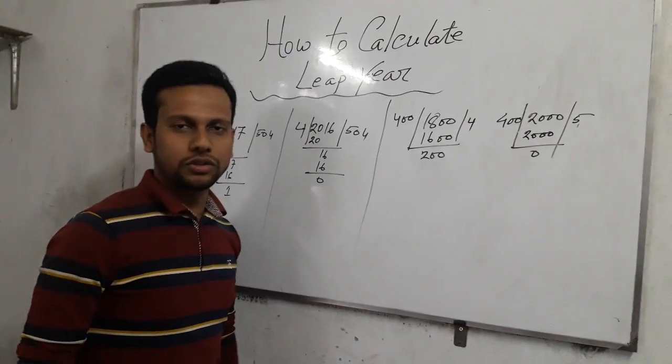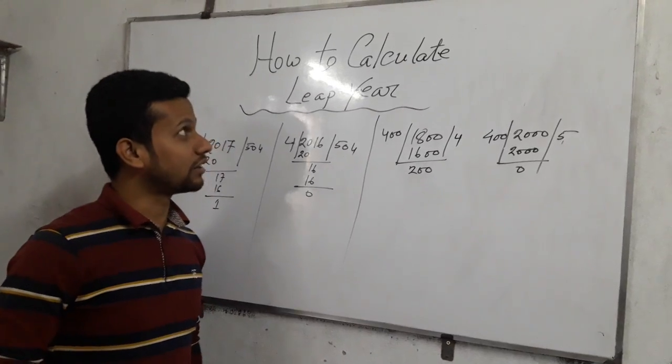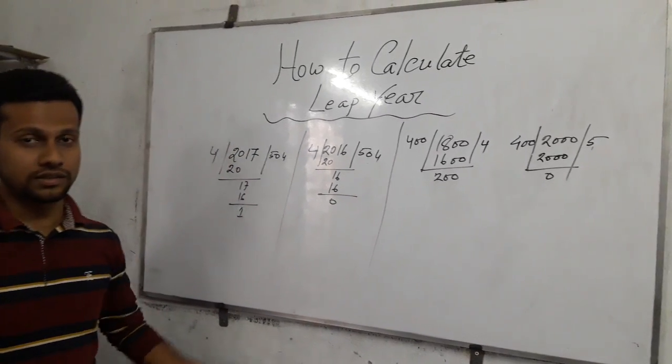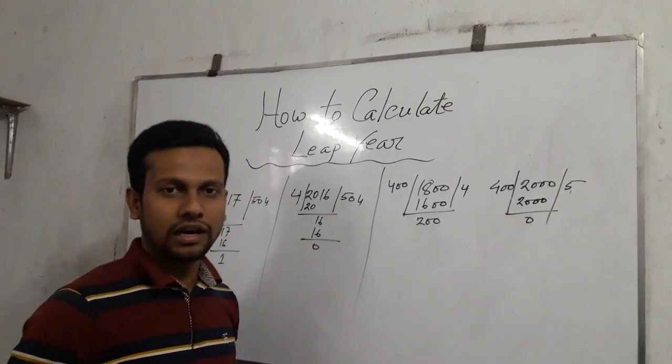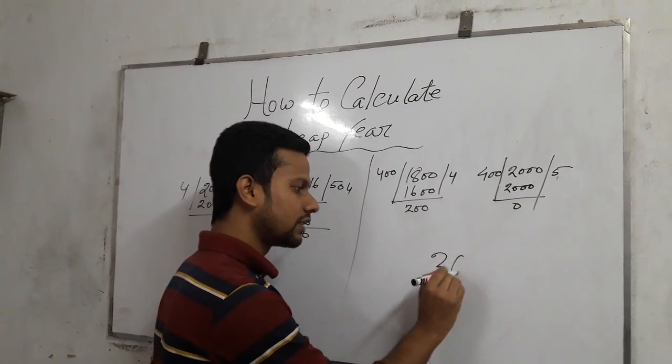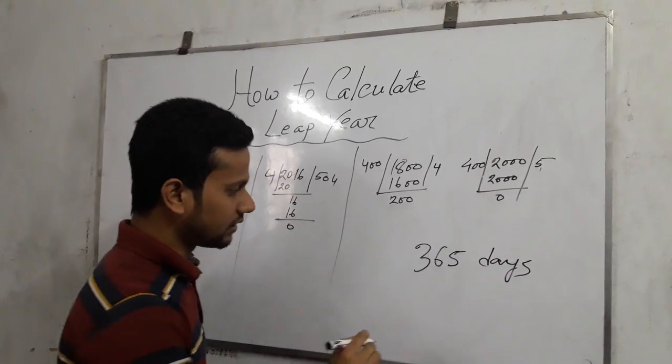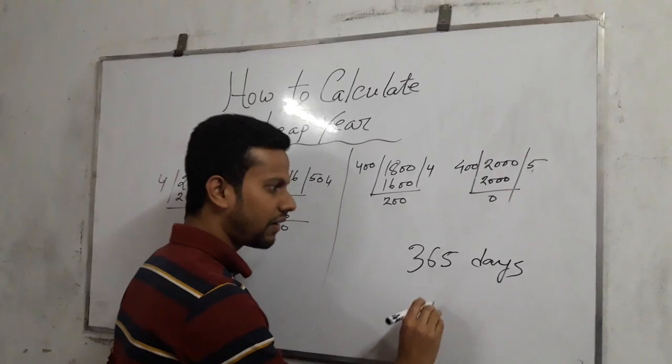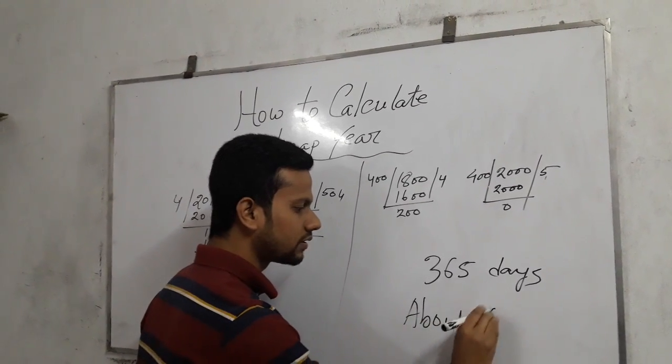Salam alaikum viewers, today we are going to discuss about leap year, how to calculate leap year. Now let's see how to calculate leap year. You know that the earth doesn't orbit the sun exactly 365 days. It takes time, 365 days and about six hours.